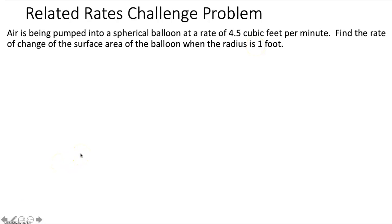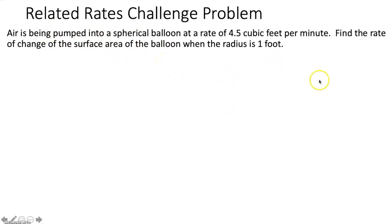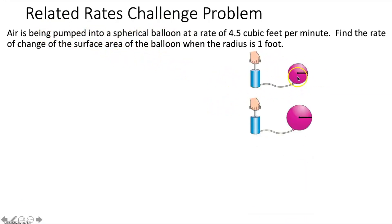Step one in a related rates problem is to make a sketch. We're going to label any constant measures with a number and any changing measures with a variable. We have a spherical balloon and air is being pumped in, so the only measure in a sphere is really the radius. Because air is being pumped in, the radius is changing — it's getting bigger — so we put a variable R for the radius.